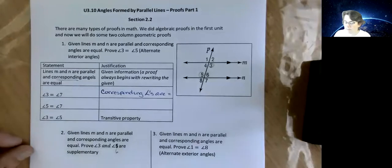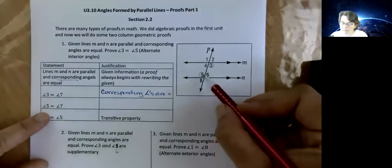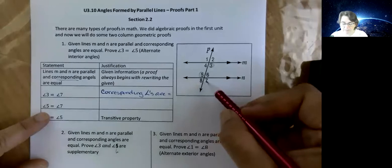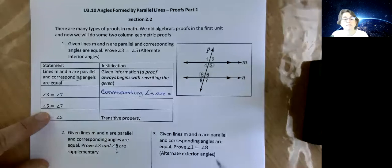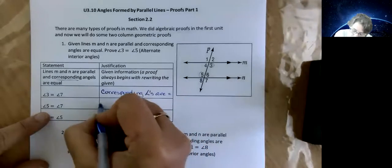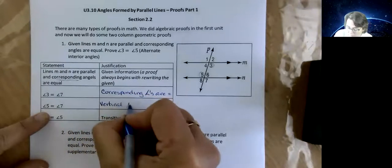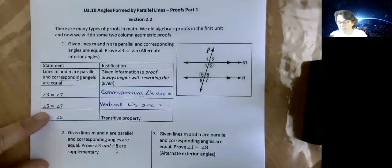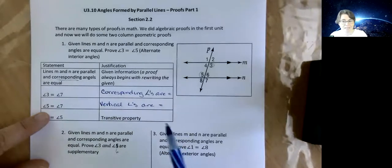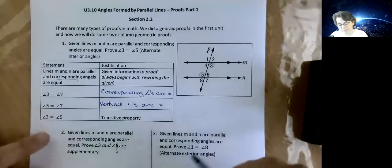So our reason is corresponding angles are equal. So now we know that 3 and 7 are the same size, and then it says, let's talk about 5 and 7. Well what is the connection between 5 and 7? Those are, you should remember, vertical angles are equal. You can see I use a lot of shorthand in here. In case you're not sure that's angles, equal, you got it.